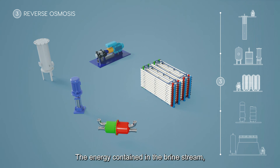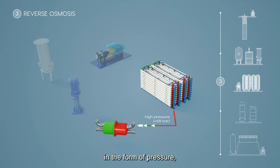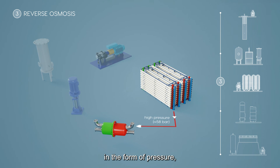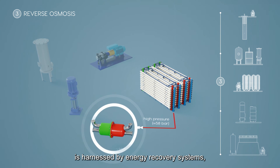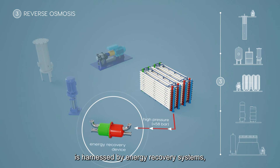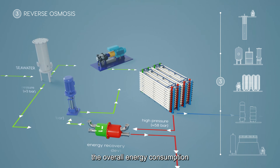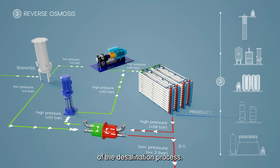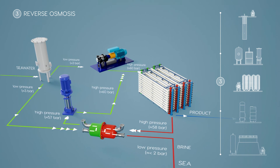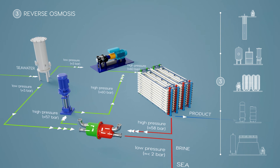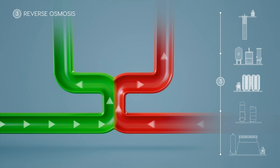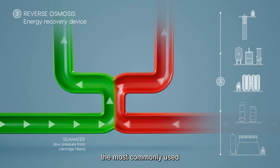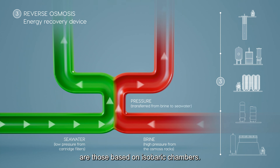The energy contained in the brine stream in the form of pressure is harnessed by energy recovery systems, which help to reduce the overall energy consumption of the desalination process. Many different systems exist; the most commonly used are those based on isobaric chambers.